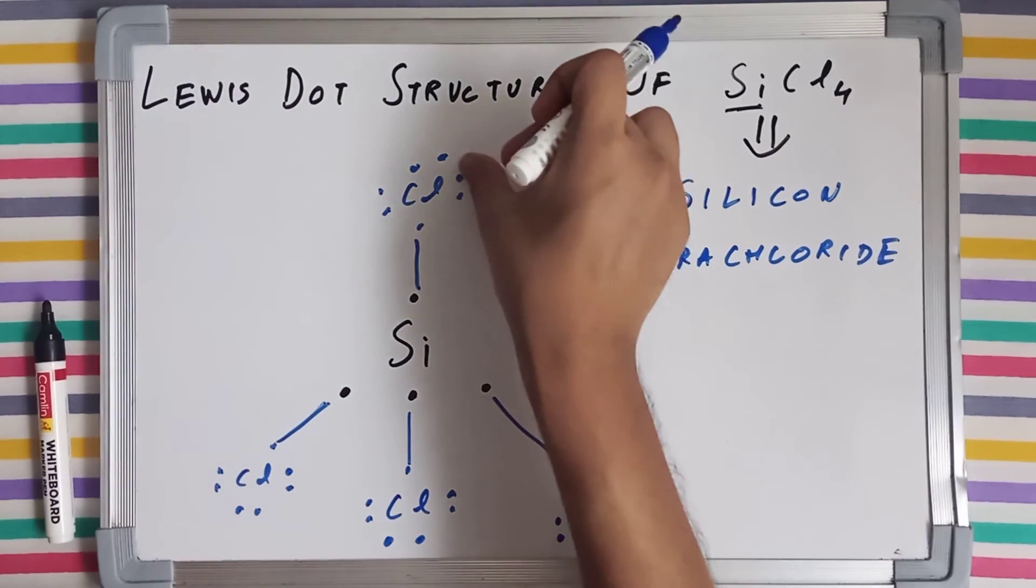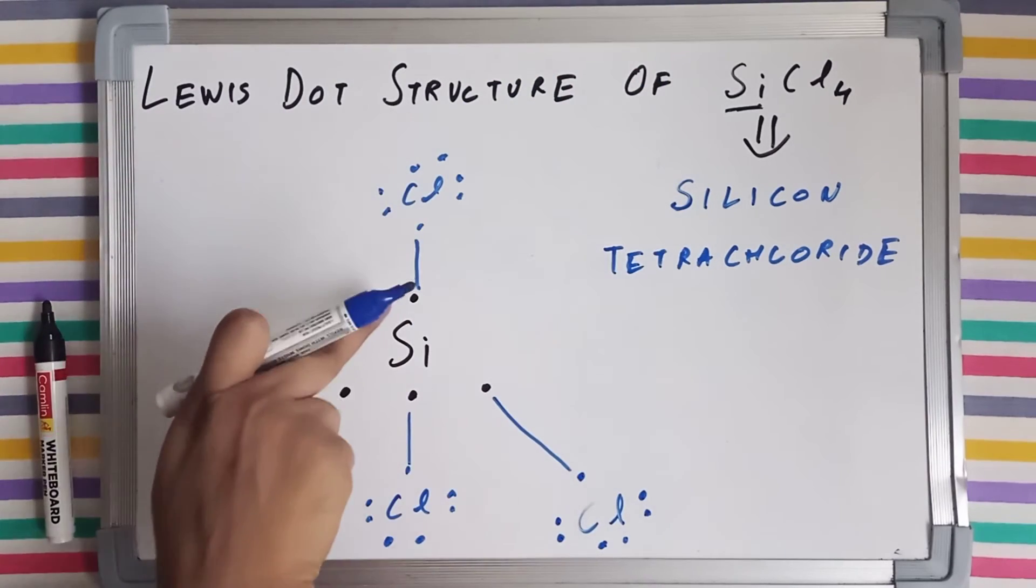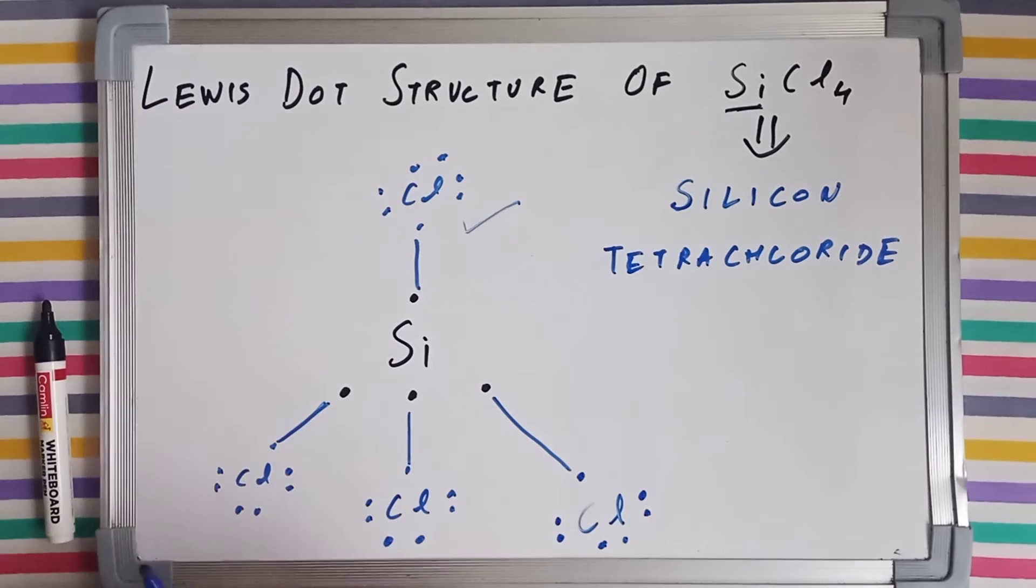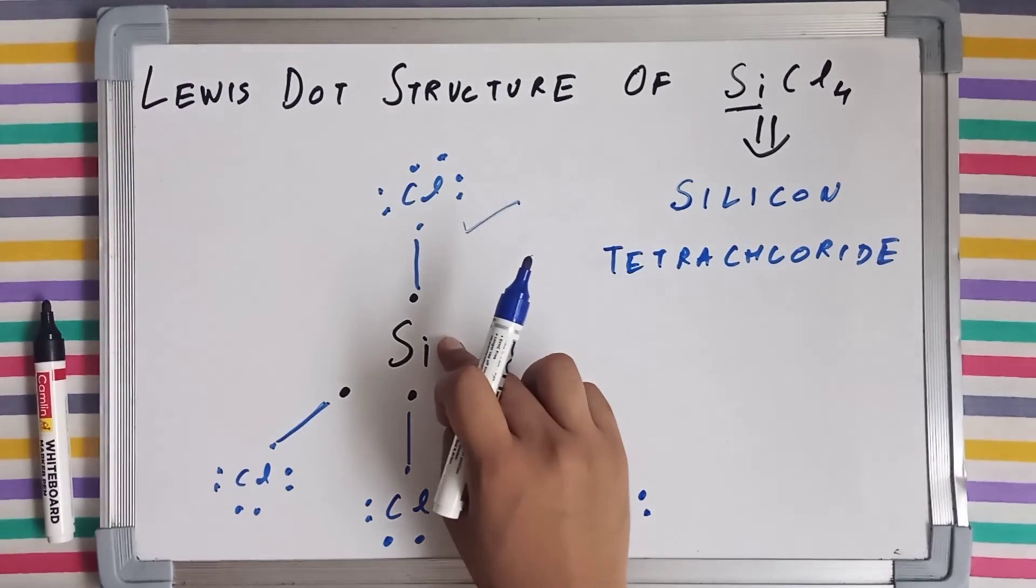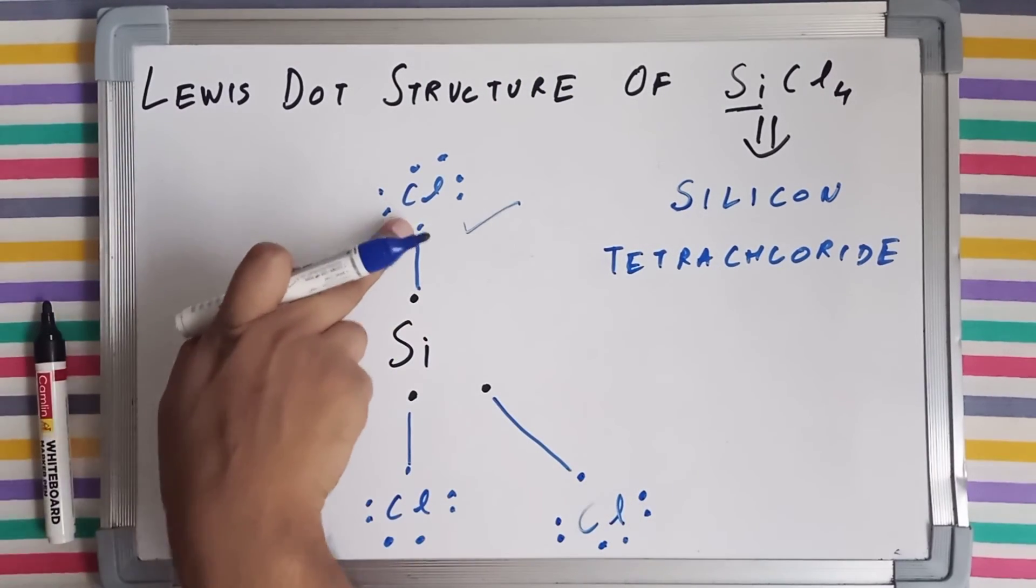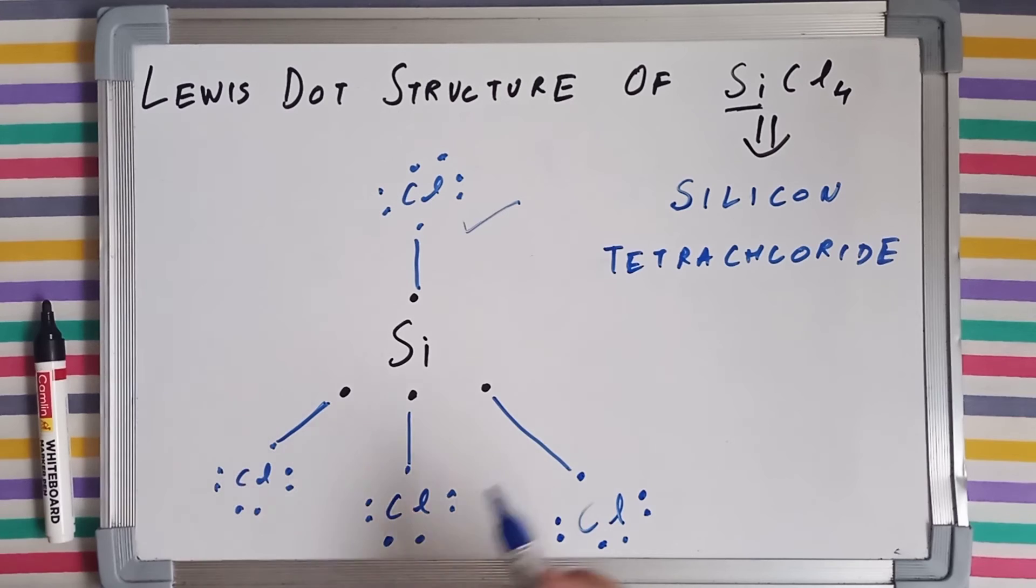So let's see: one, two, three, four, five, six, seven, and eight. So chlorine has completed its octet. Similarly, these three chlorines have also completed their octet just like this one.